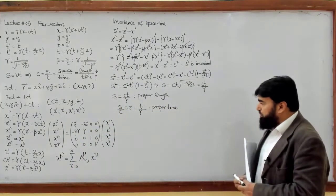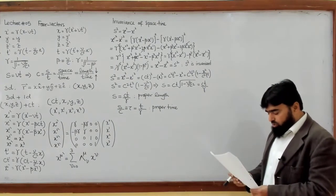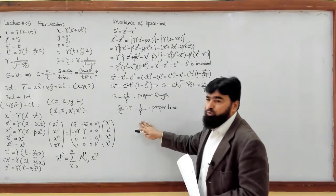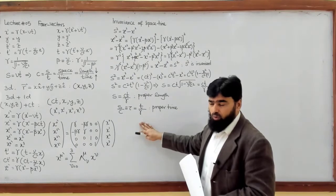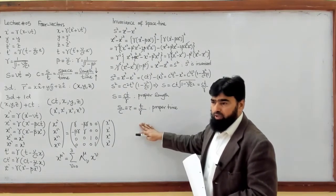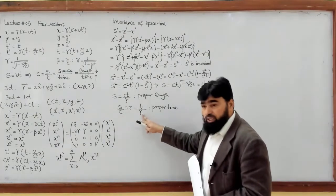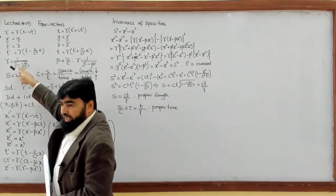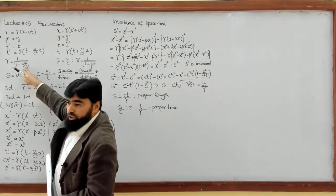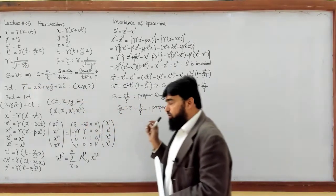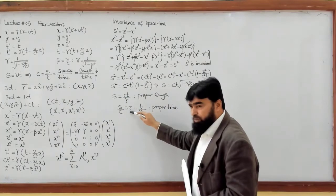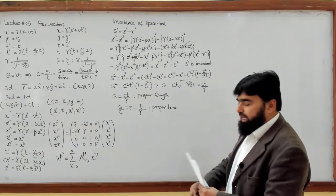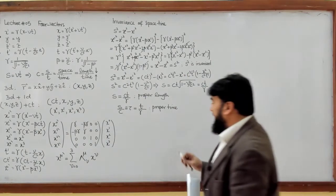It is important to note that the only clock which will give you the proper time is the clock which is with you, because gamma depends on v and c and therefore varies. The only invariant time is given by the co-moving clock. Now we will discuss the invariance of momentum and energy.